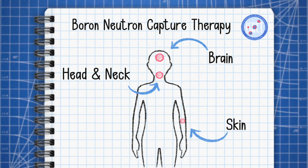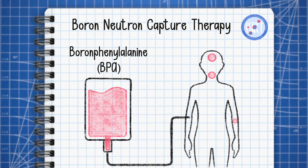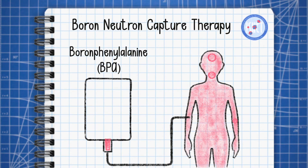Clinical studies showed an overall therapeutic advantage to improve the patient's quality of life. BNCT works in two steps: an administration of boron compounds and a neutron irradiation.